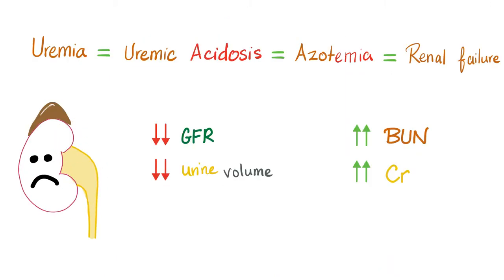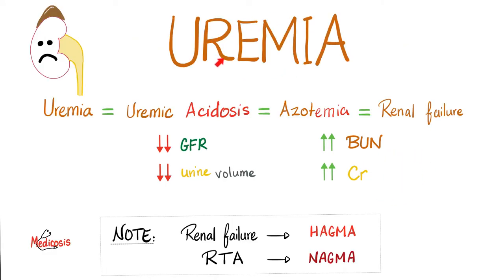Kidney failure is characterized by accumulation of urea in the blood, called uremia — nitrogenous waste in the blood, azotemia. Remember that your metabolism secretes all kinds of acids, especially from the metabolism of proteins. So we call this uremic acidosis. Is this the lung's fault? No, the lung is healthy. Therefore this is a metabolic acidosis with high anion gap. In kidney failure — whether acute or chronic kidney disease — you end up with a metabolic acidosis with high anion gap. However, in renal tubular acidosis, you end up with a metabolic acidosis with normal anion gap. Keep this in mind: acute kidney injury — HAGMA; chronic kidney disease — HAGMA; but renal tubular acidosis — NAGMA. We shall discuss renal tubular acidosis in a later video in my nephrology playlist.